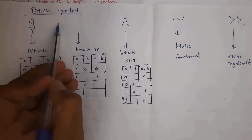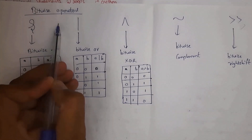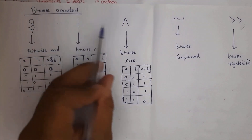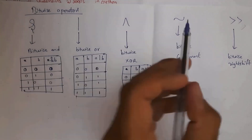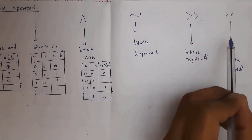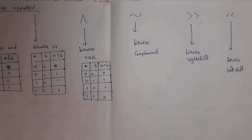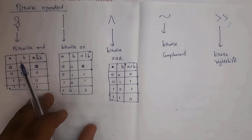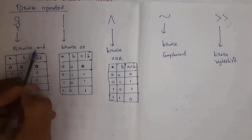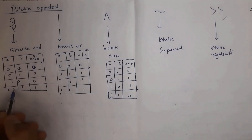There are six bitwise operators: bitwise AND (&), bitwise OR (|), bitwise XOR (^), bitwise complement (~), bitwise right shift (>>), and bitwise left shift (<<). Bitwise operations can only be performed on integer and boolean values.